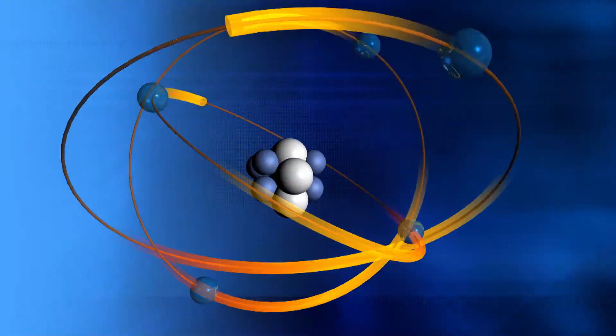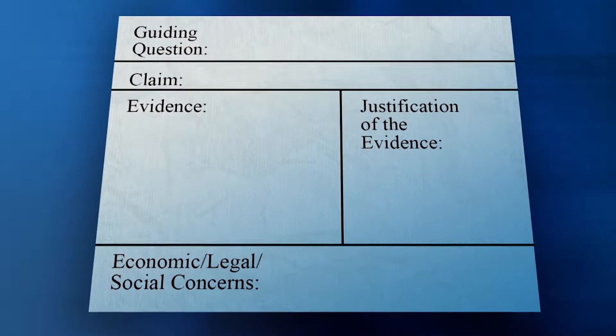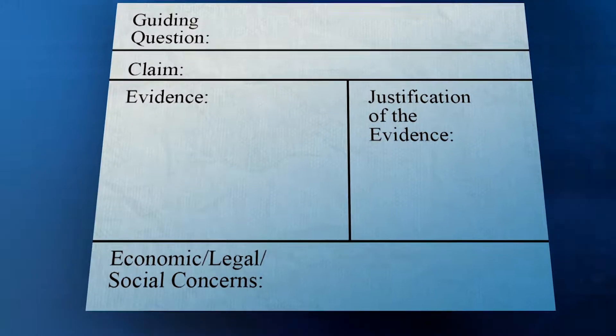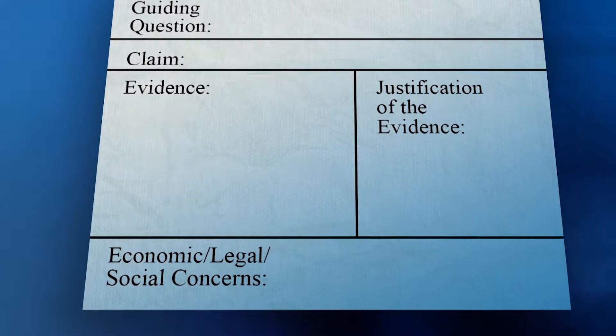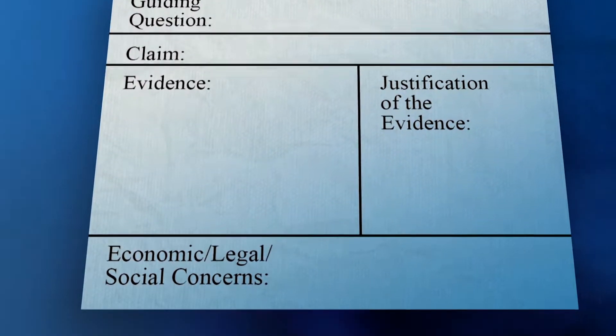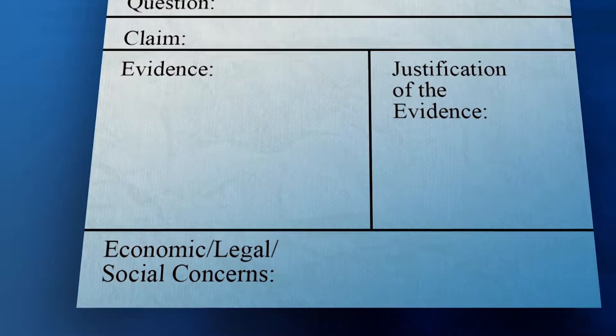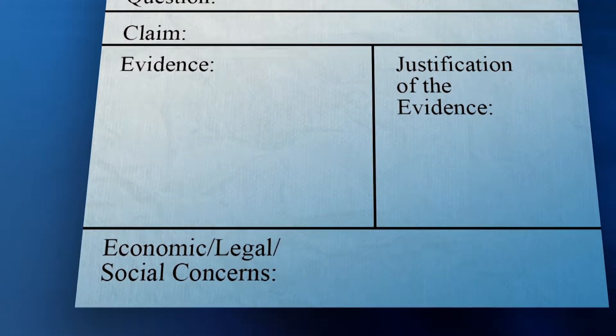So let's get to it. Now that you've taken some time to make a display board with your guiding question, your claim, and the evidence you're using, at the bottom of the display you should have listed possible concerns to the economy, or to health, or maybe legal or political concerns. Now it's time to argue using evidence.